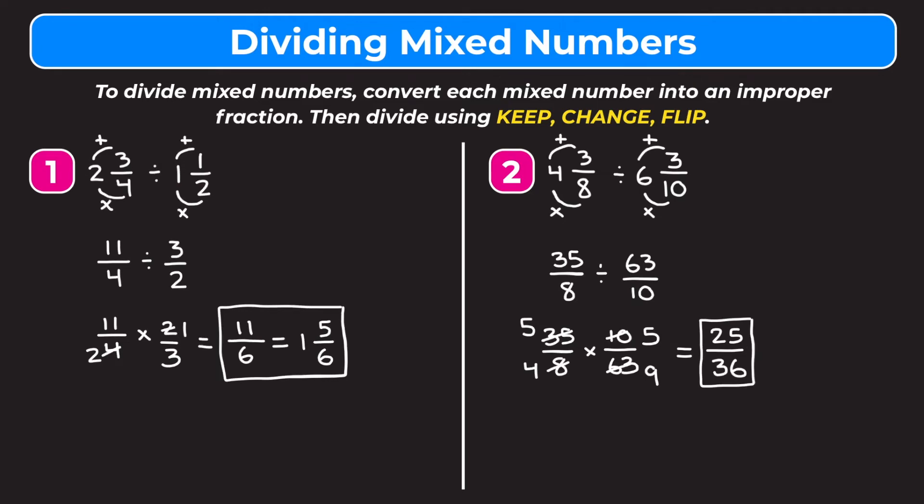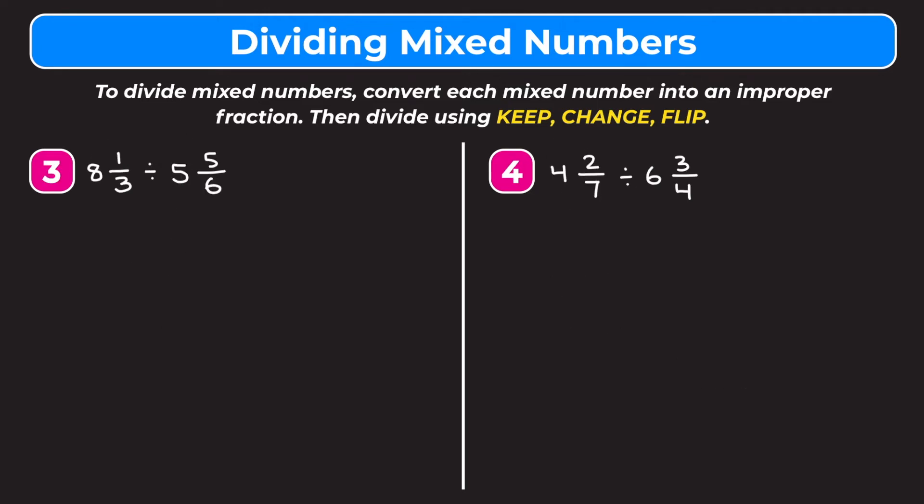For the last two examples, I encourage you to pause the video and try them on your own, then watch me work through the problems to check your work. Example three is eight and one-third divided by five and five-sixths. We'll start by changing our mixed numbers into improper fractions.